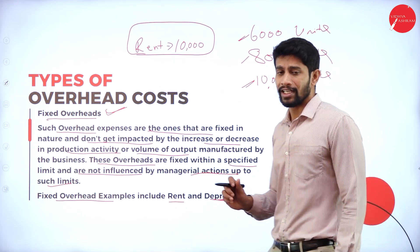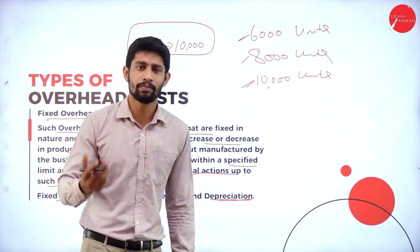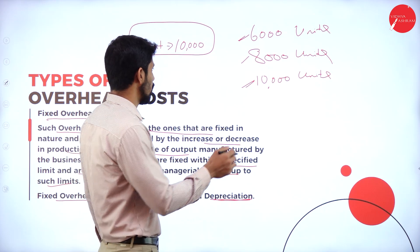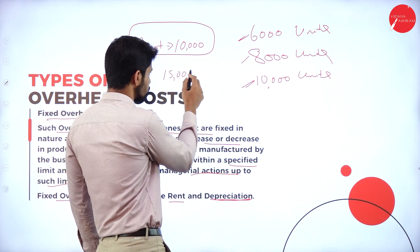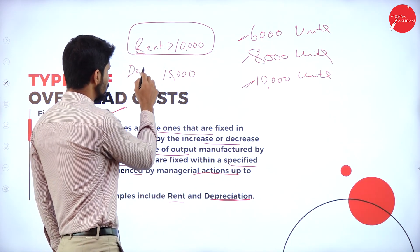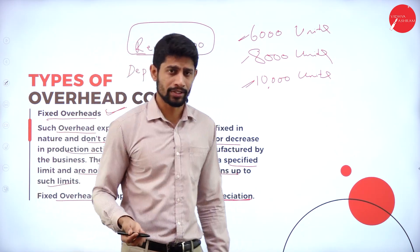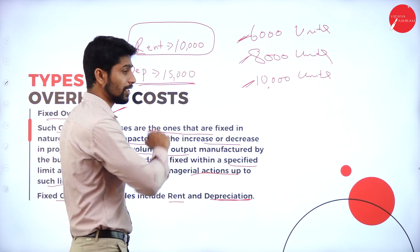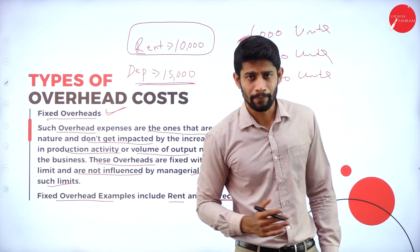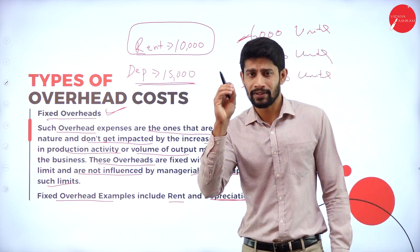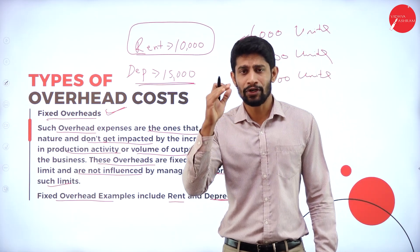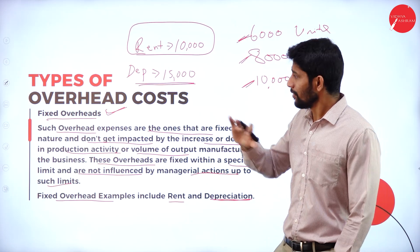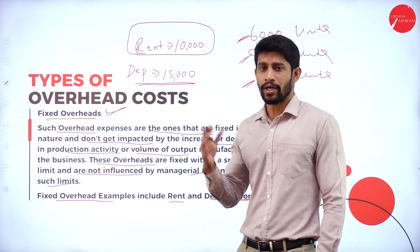Next is depreciation — depreciation on furniture, plant and machinery, computers, and motor vehicles. For example, depreciation on machinery of 15,000 rupees. Whether you are producing 6,000, 8,000, or 10,000 units, you are supposed to give the depreciation of 15,000 on a particular machinery at the end of the year. Fixed overheads are expenditures that will not get changed as the production activities change — whether production increases or decreases, the overheads remain the same.